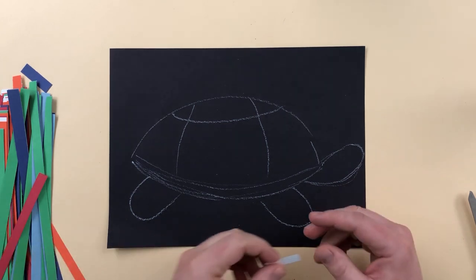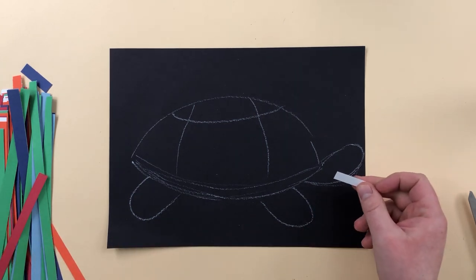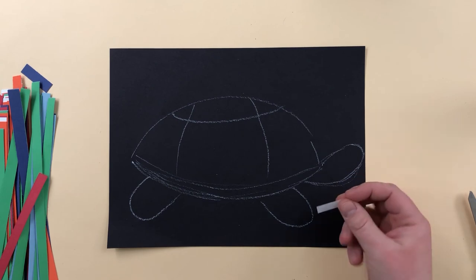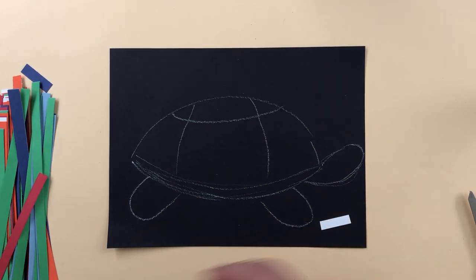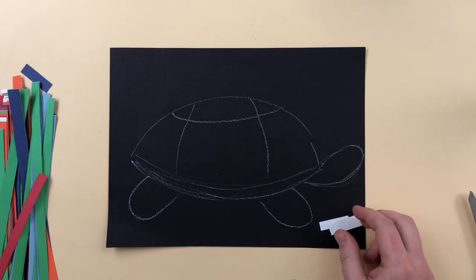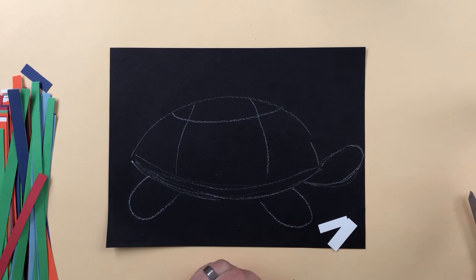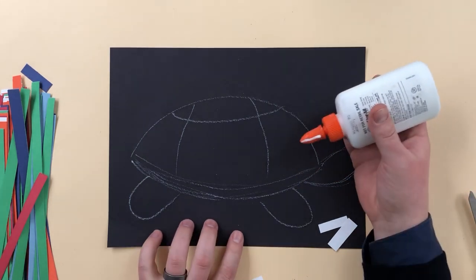One color that I know I'm not going to use and will stand out very good against black is white. A lot of times I tell students just use white for the outlining because it's easy, it's quick, and then it stands out real good and you don't have to worry about not being able to use any colors. You can still use all the colors.